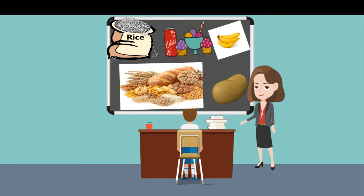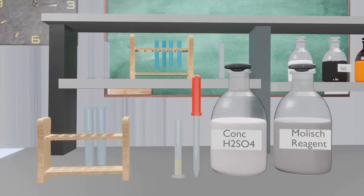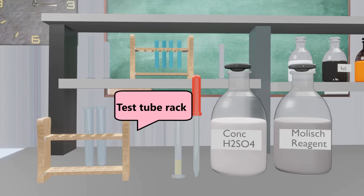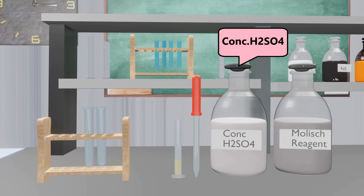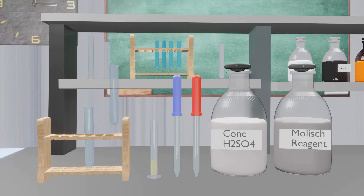Soft drinks, cherry pie, etc. The presence of carbohydrates in a solution can be detected by performing the following tests in the laboratory. The Molisch test is a screening test for confirming the presence or absence of carbohydrates. Materials required for this test are: unknown solution, test tube rack, test tubes, dropper, concentrated sulfuric acid, and Molisch reagent.